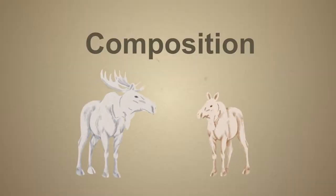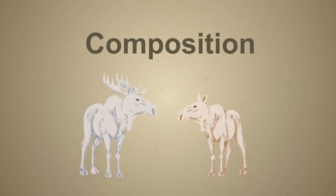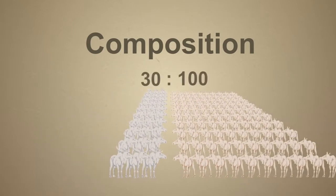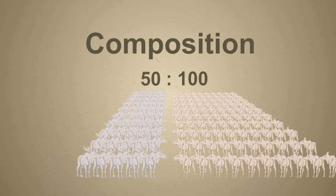For moose, we try to maintain a minimum of 30 bulls to 100 cows in areas with higher density populations, and 50 bulls to 100 cows for low density populations.